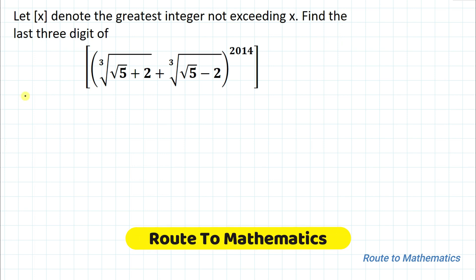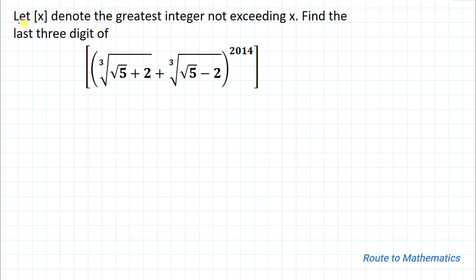Hello everyone, welcome to Root 2 Mathematics. In this video we are going to solve an interesting Olympiad question. The given question is: let the floor function of x denote the greatest integer not exceeding x. Find the last three digits of (∛(√5+2) + ∛(√5-2))^2014.